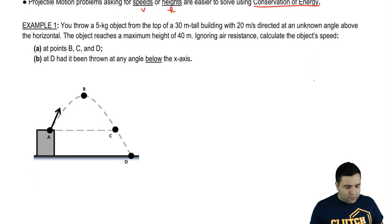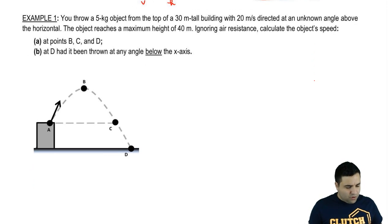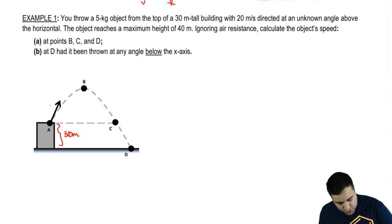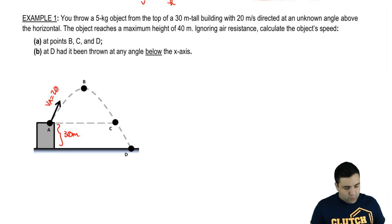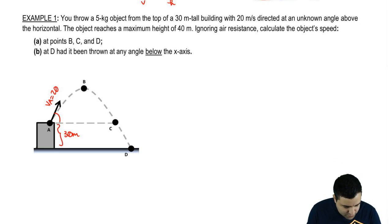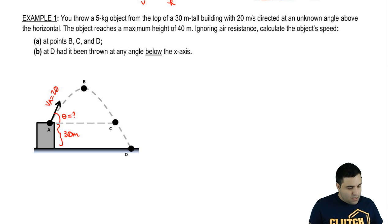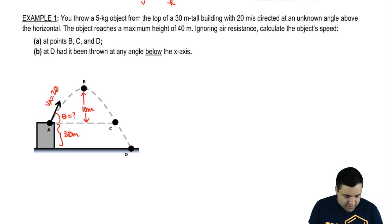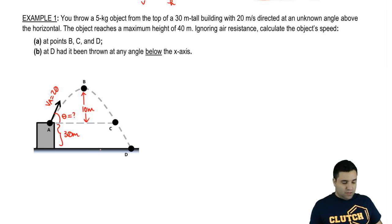Here's the problem: you throw a 5-kilogram object from the top of a 30-meter tall building with 20 meters per second — so V_A is 20 m/s directed at an unknown angle above the horizontal. The object reaches a maximum height of 40 meters, meaning an additional 10 meters above the building. Ignoring air resistance, calculate the object's speed at points B, C, and D.